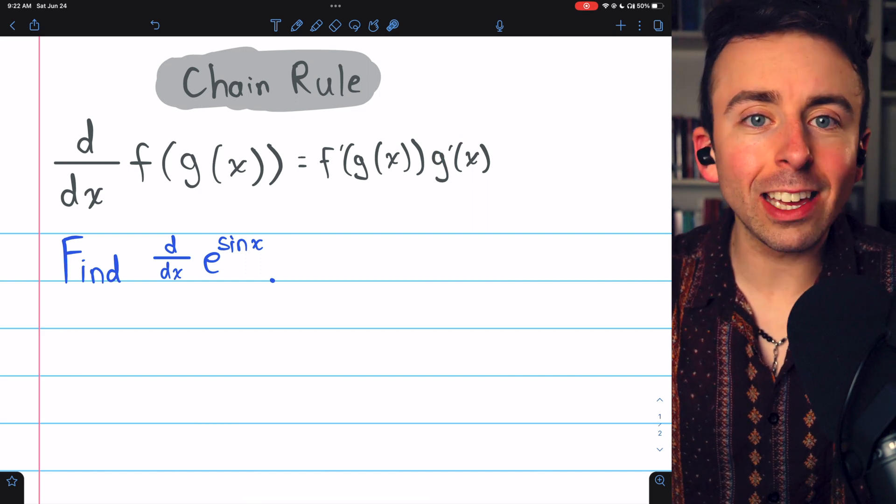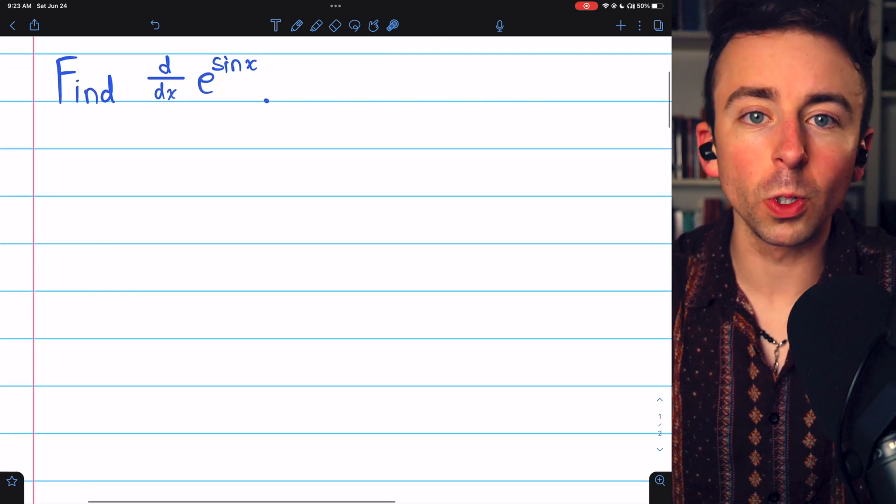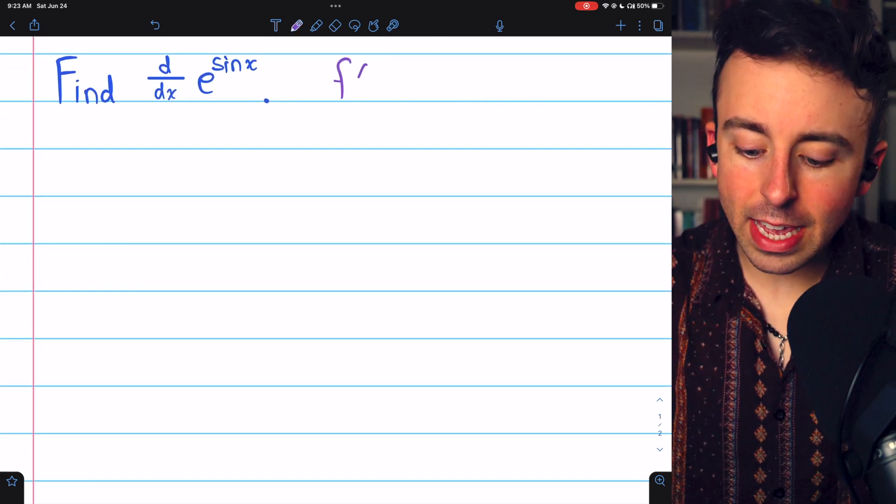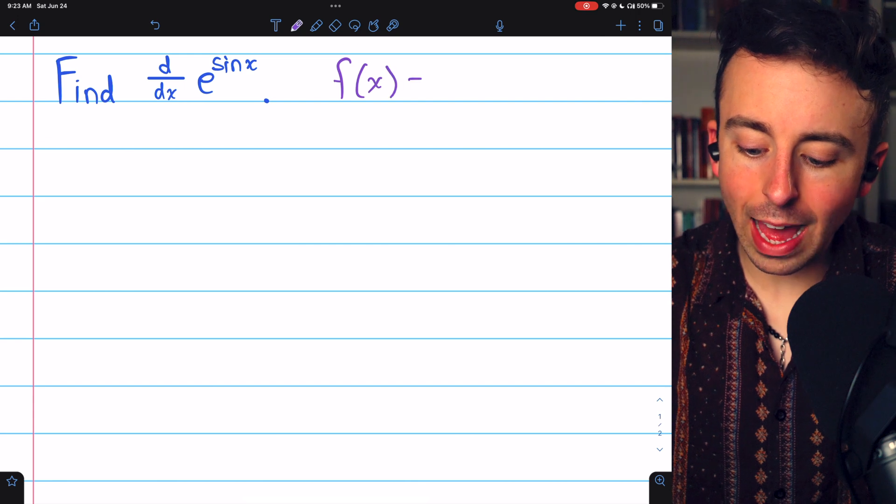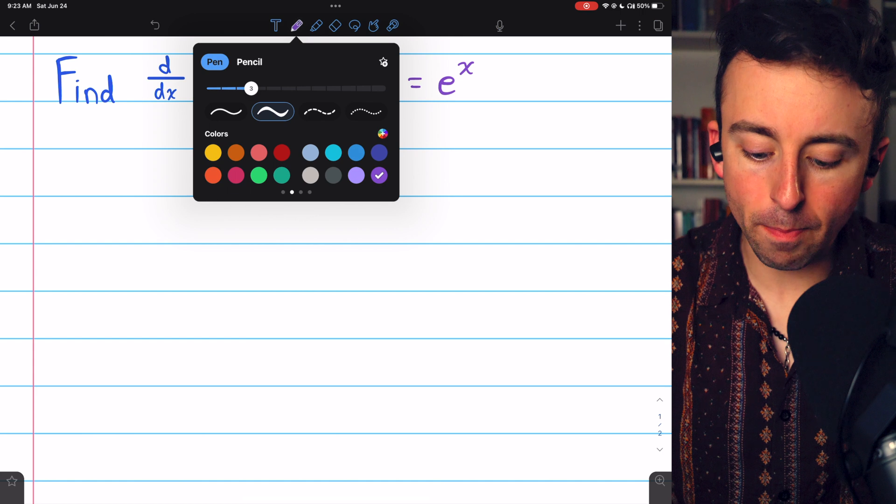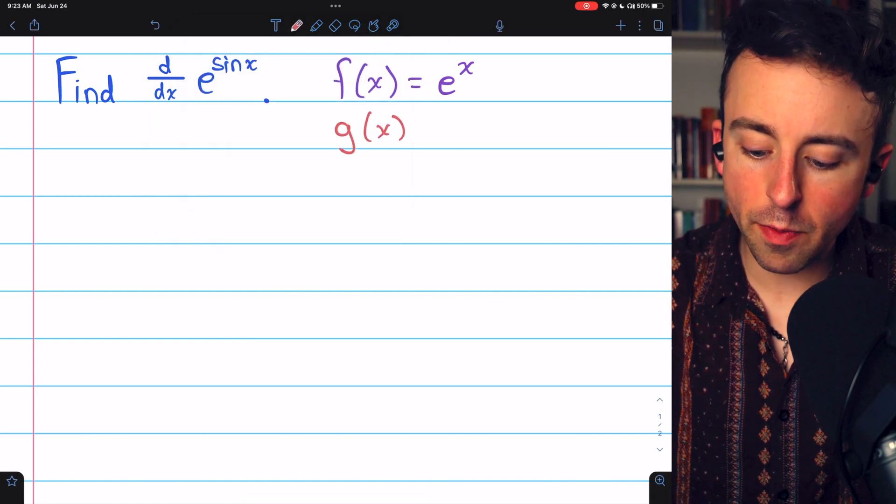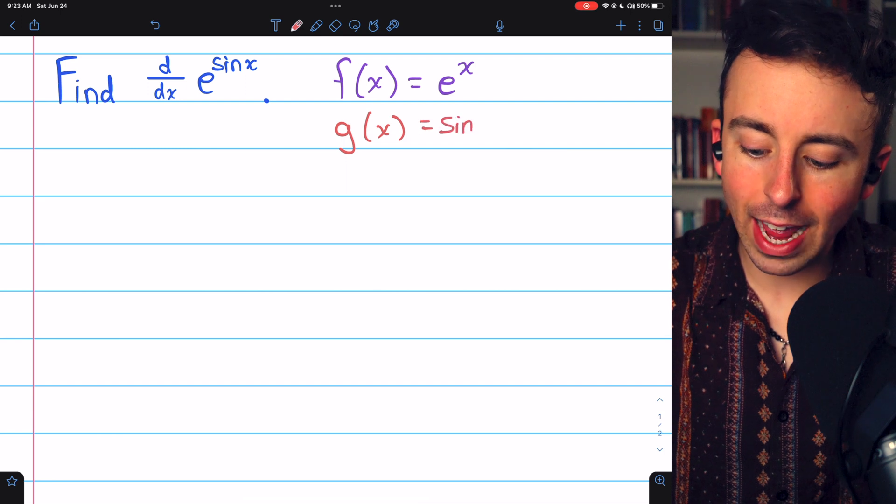As long as we can accurately identify the outside and inside function, we'll be able to apply the chain rule no problem. In this case, the outside function f of x is e to the x. The inside function, the power of e, which we call g of x, is simply sine x.